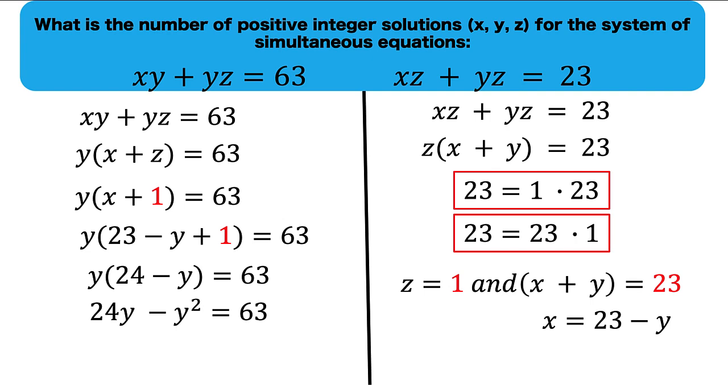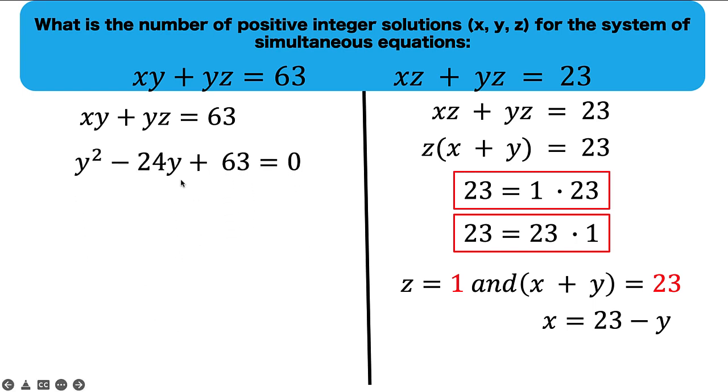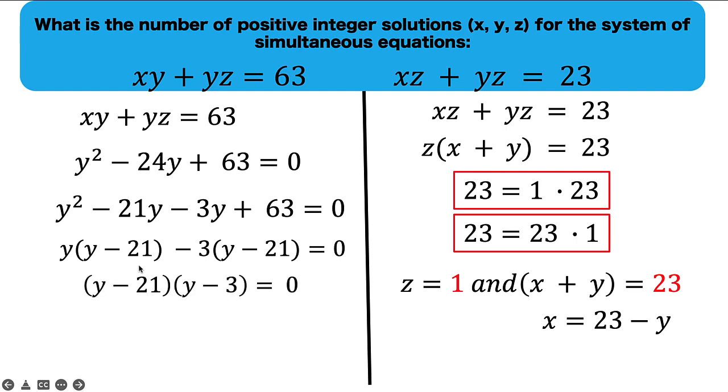Let's rewrite this in the standard quadratic form and we know how to solve this quadratic equation. We can split this minus 24y into minus 21y minus 3y so that we can factor by grouping. And here is a common factor of y minus 21 that we factor out again.